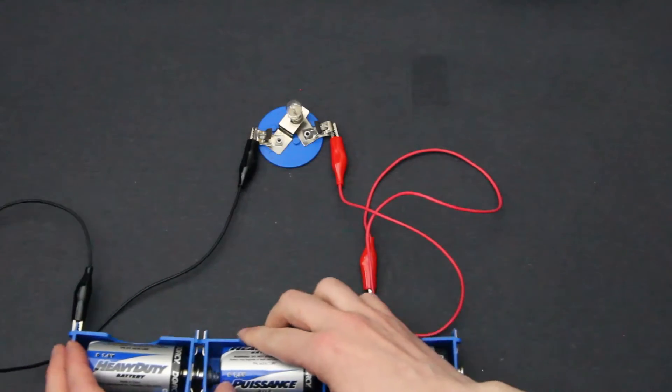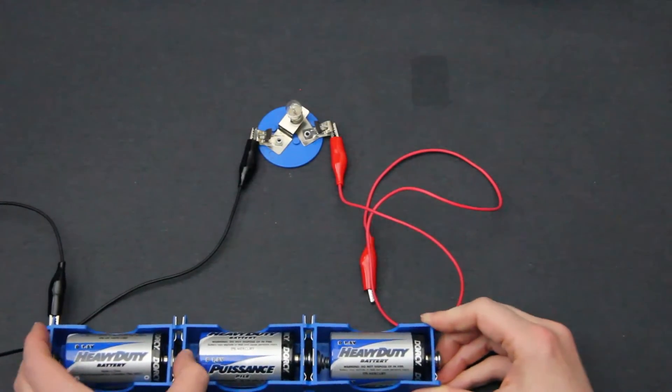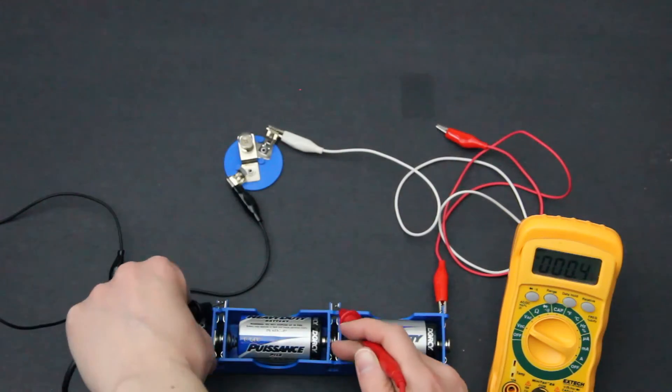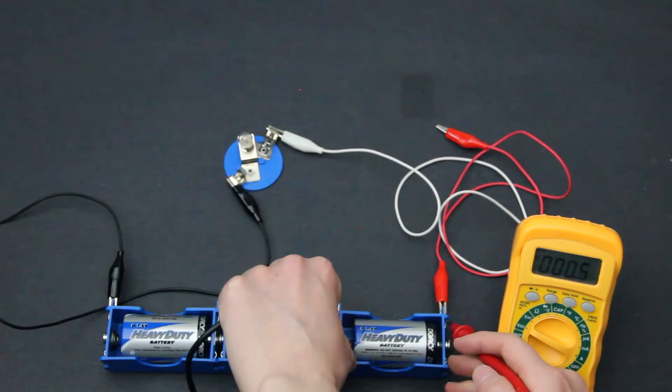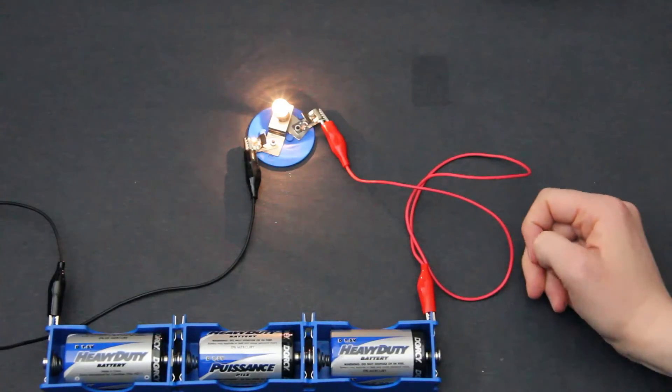We can increase the voltage by putting batteries together in series. These 3 1.5 volt batteries can add up to 4.5 volts, and you can see that this brightens the light.